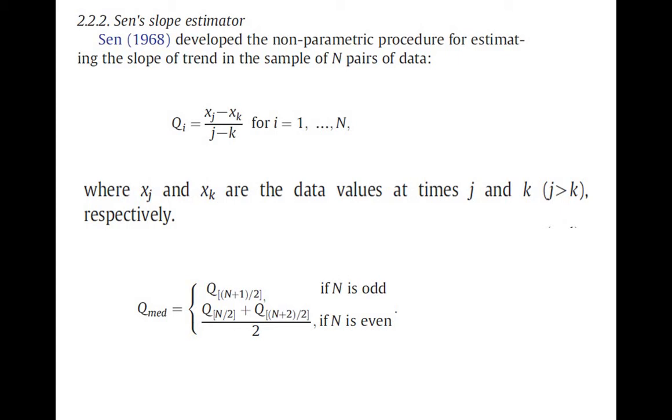We can find out the slope of trend in the sample of n pairs of data. Here, basically what we mean by non-parametric: non-parametric means that the distribution of the data need not be normal.